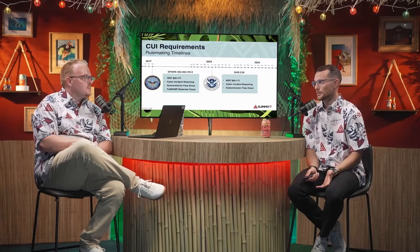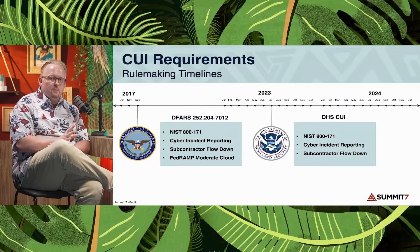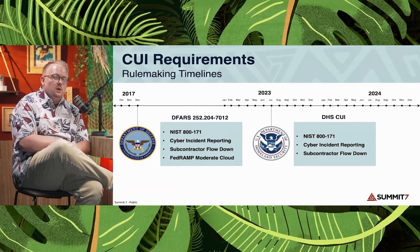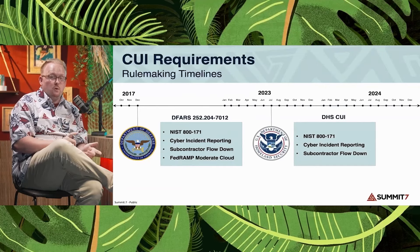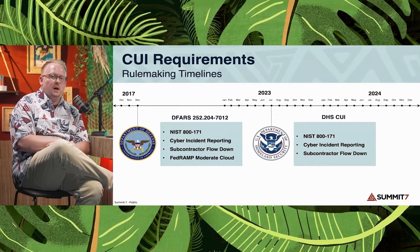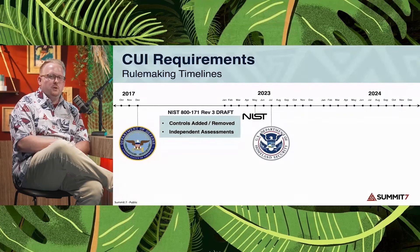Recently, DHS came out with a CUI rule. DHS is following similar footprints: NIST 800-171 and cyber incident reporting. An interesting difference is that DoD has a 72-hour window, but DHS could potentially go down to just a few hours depending on the type of information — sensitive PII, SPII, or PHI. Subcontractor flow down is also included. Notably, the FedRAMP requirement hasn't been called out, but cyber incident reporting requirements could play into requirements around Microsoft Gov Cloud, which responds to a higher level of cyber incidents than the commercial cloud.